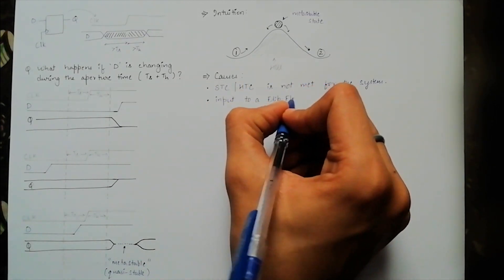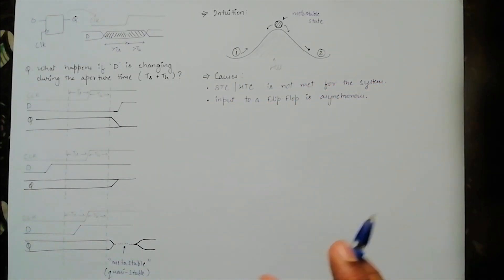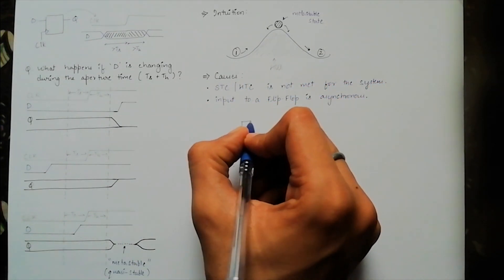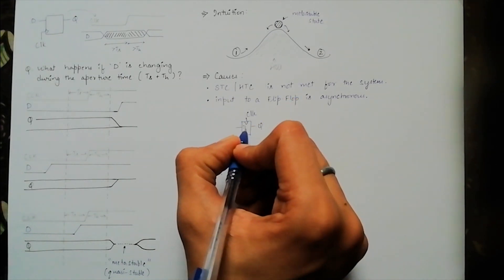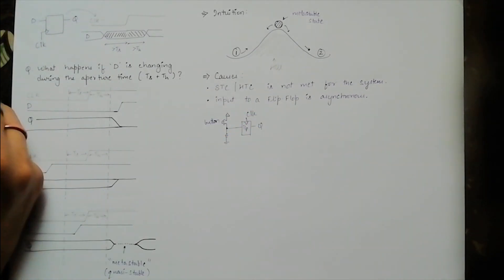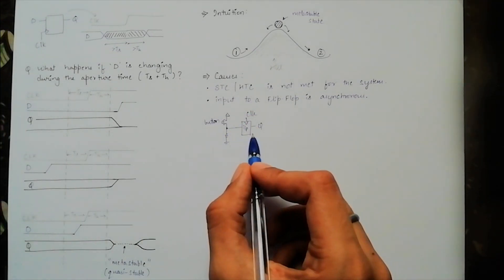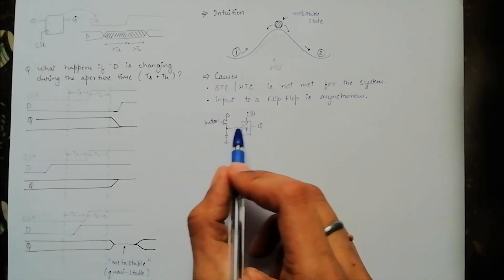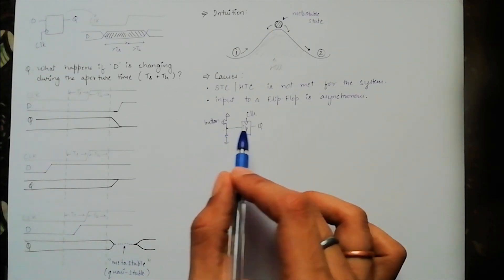If the input to a flip-flop is asynchronous, this statement needs some more explanation. If the input to a system is, let's say from a button, you can't predict when the button will be pressed. Therefore, you can't ensure that the system won't go into the metastable state.